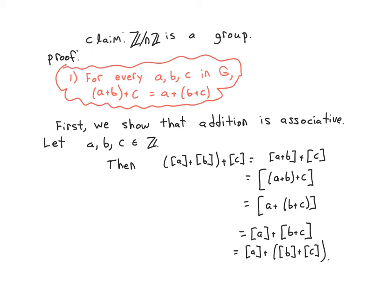When you see this proof without explanations it looks like a bunch of random symbols, but going through the logic at each step it makes sense: the first term is the sum of three equivalence classes, the next is the sum of two equivalence classes one represented by the sum of two integers, and so on. We see addition is associative — we took three arbitrary elements and showed the order of parentheses didn't matter.